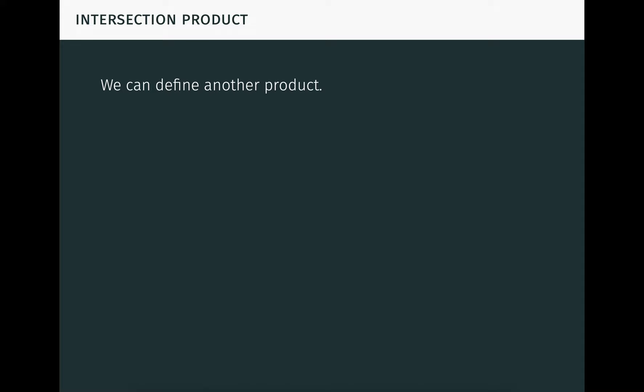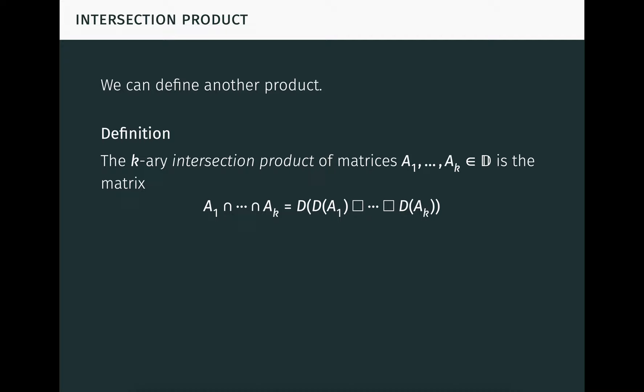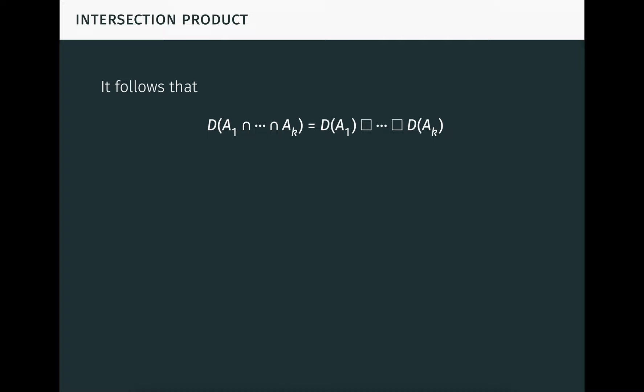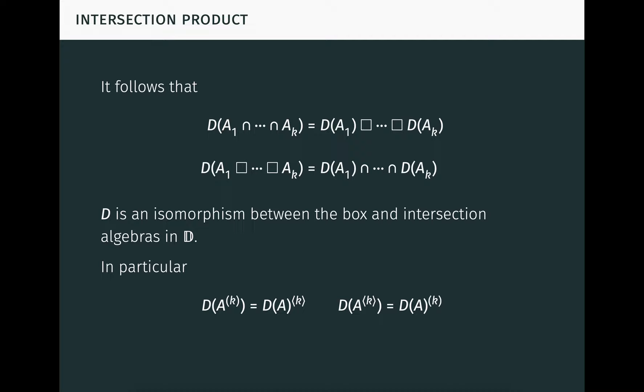We can also define another interesting matrix product, which is even less widely known than the box product. The intersection product of matrices in d is the dual of the box product of their duals, and is denoted here by the intersection symbol. The kth intersection power of a matrix in d is 1 over k factorial times the intersection of k copies of itself. Note we put parentheses around the exponent k in the intersection power to distinguish it from the compound power and the ordinary matrix power. My thinking here was that the parentheses kind of look like little intersection symbols, turned sideways and flattened a little bit. I was running out of symbols, so work with me people. It follows immediately from this definition, and the fact that the dual map is an involution, that the dual of an intersection product is the box product of the duals. And also the dual of a box product is the intersection product of the duals. So the dual map is an isomorphism between the box and intersection algebras in d. In other words, the intersection and box product are dual operations. In particular, intersection powers and compound powers are dual to each other.